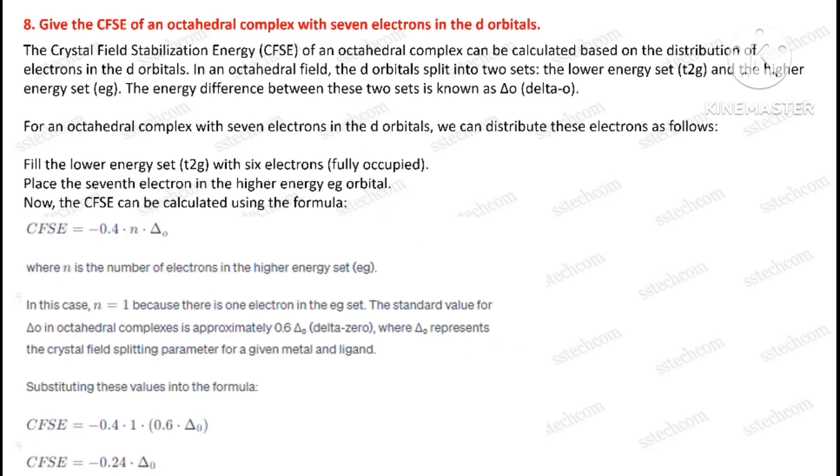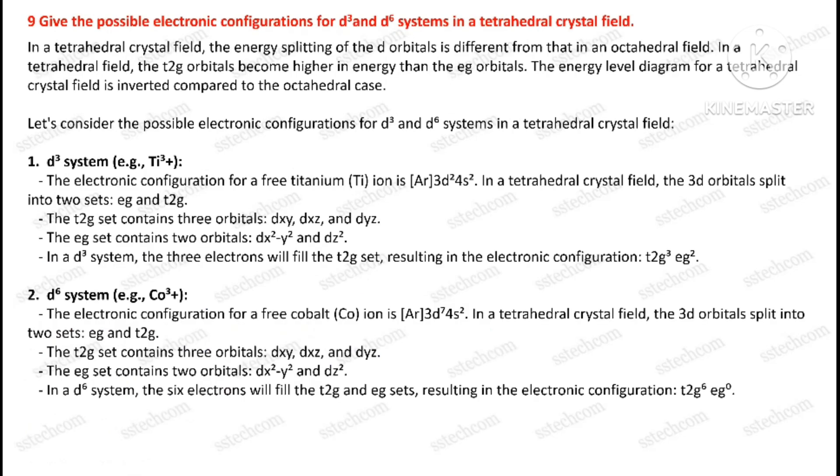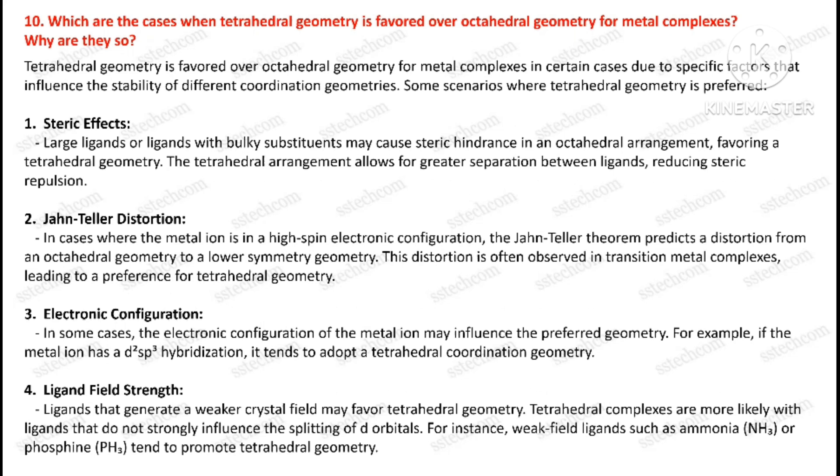Question number eight: Give the CFSE of an octahedral complex with seven electrons in the d orbitals. Question number nine: Give the possible electronic configurations for d3 and d6 systems in a tetrahedral crystal field. Question number ten: Which are the cases when tetrahedral geometry is favored over octahedral geometry for metal complexes? Why are they so?